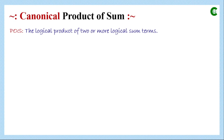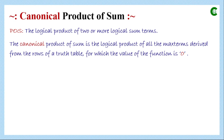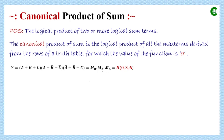Next we will see the canonical product of sum. POS is the logical product of two or more logical sum terms — an AND operation of two or more OR operations. Canonical product of sum is the logical product of all the maxterms derived from the rows of a truth table for which the value of the function is zero. In the first format each maxterm has all variables in original or complemented form; in the second format we use maxterm numbers; and in the third format we use corresponding decimal numbers only.